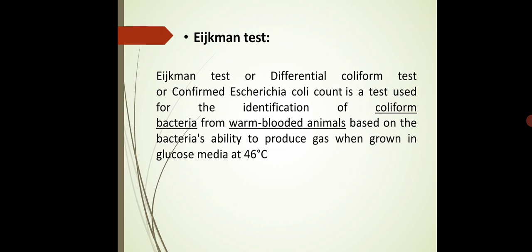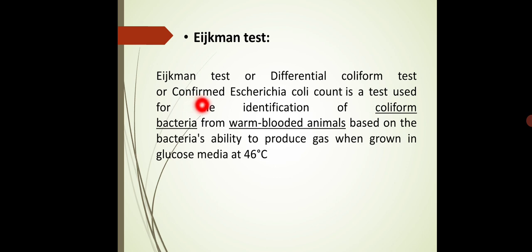As the name indicates, the Eijkman test is named after a scientist. This method was introduced by scientist Christian Eijkman in the year 1904. This test is also known as the differential coliform test or the confirmed Escherichia coli test. It is called the differential coliform test because it differentiates among the different coliform groups, and it is called the confirmed Escherichia coli test because it is specially designed to confirm the presence of E. coli.